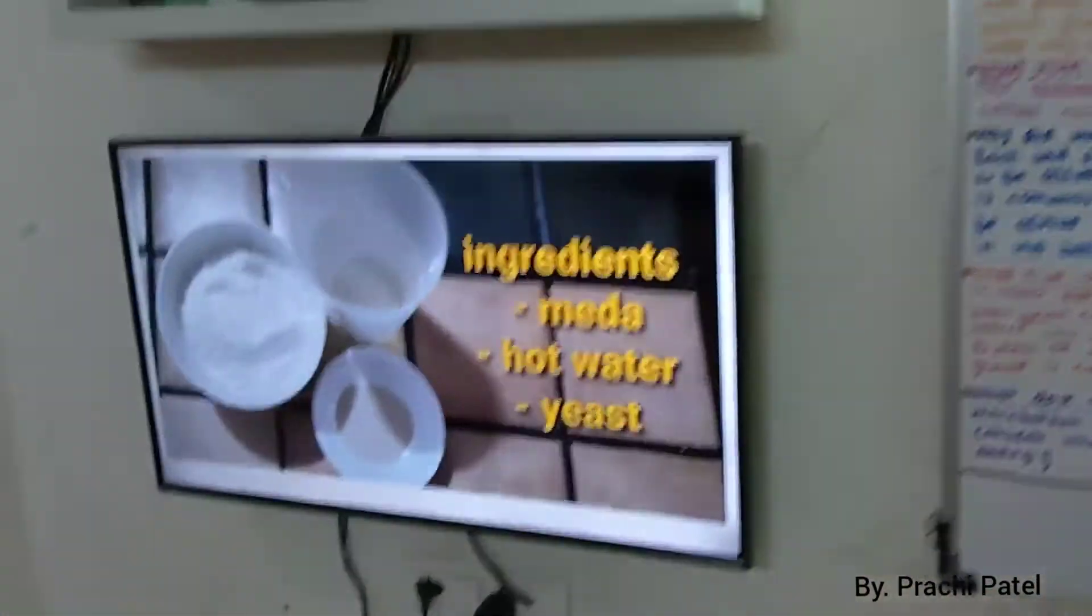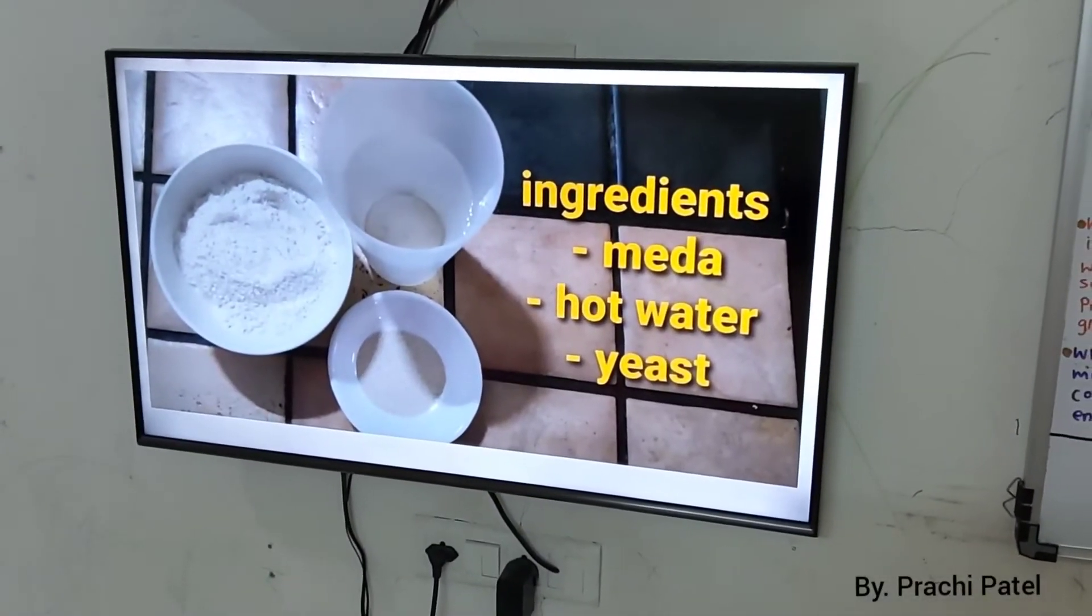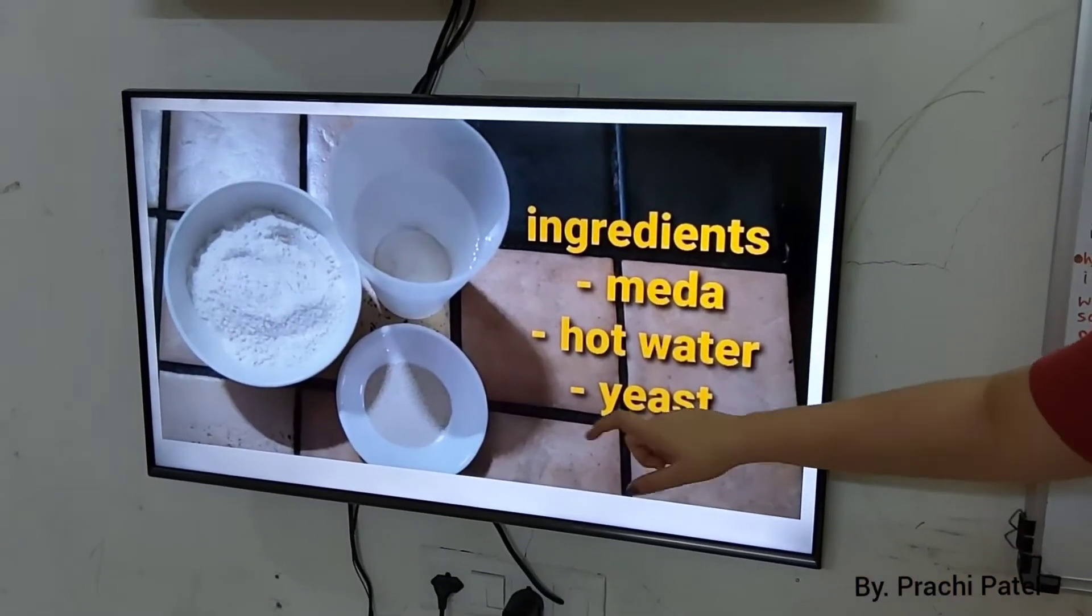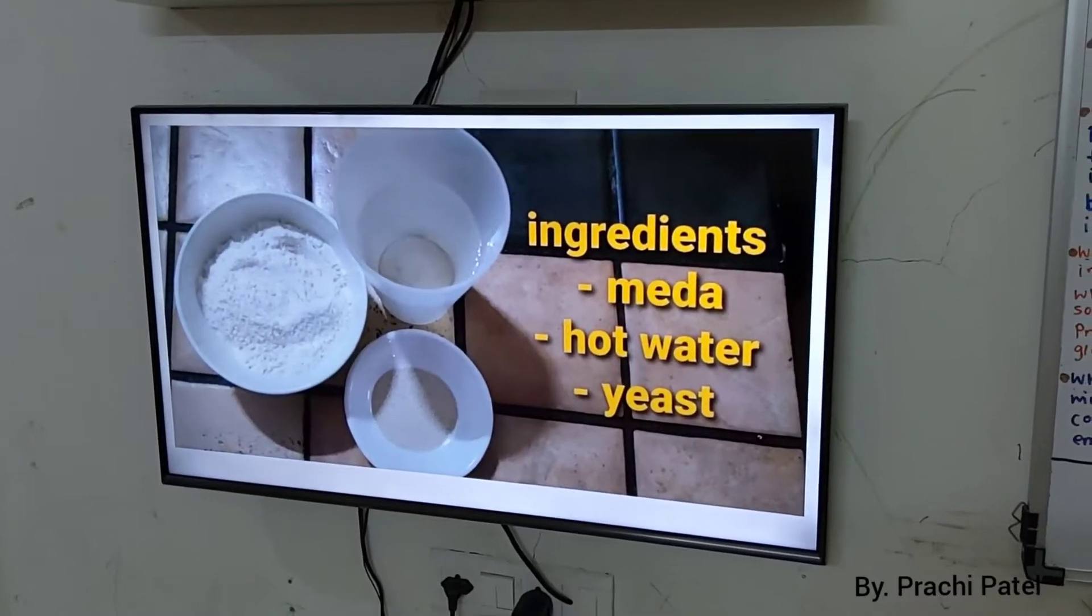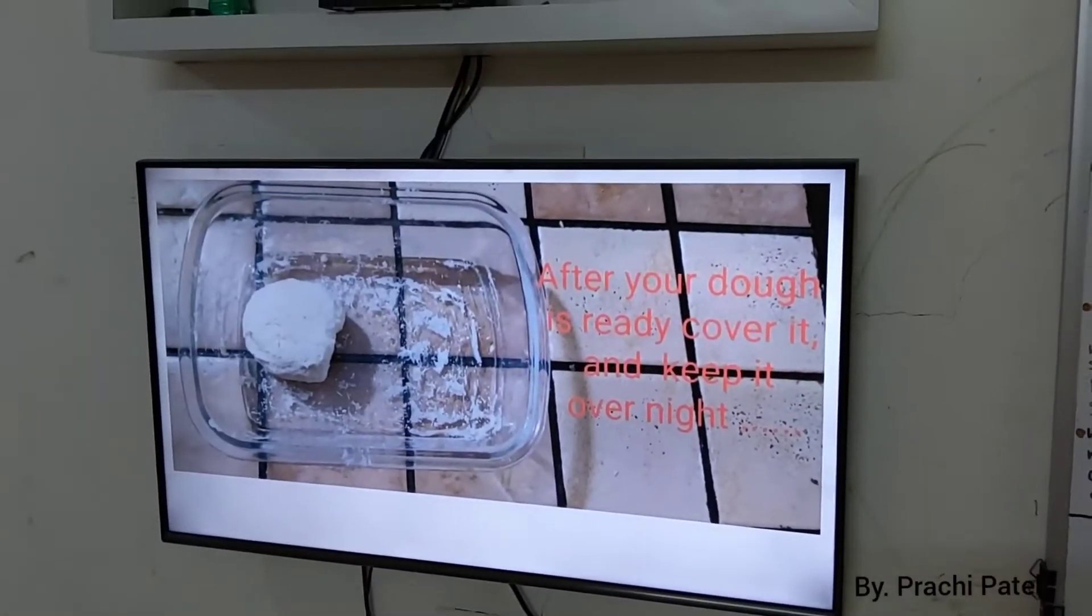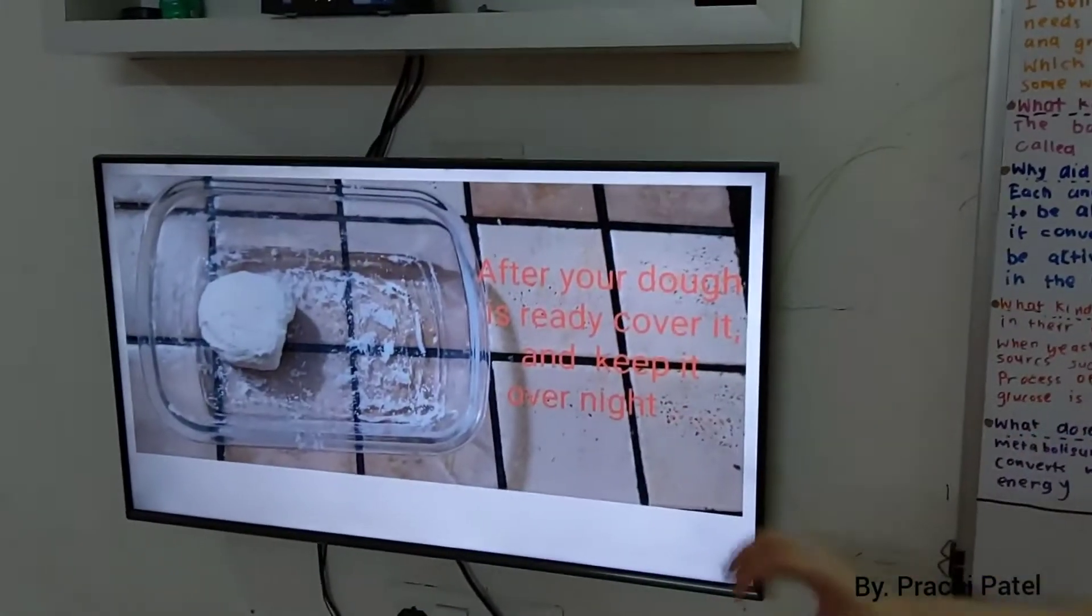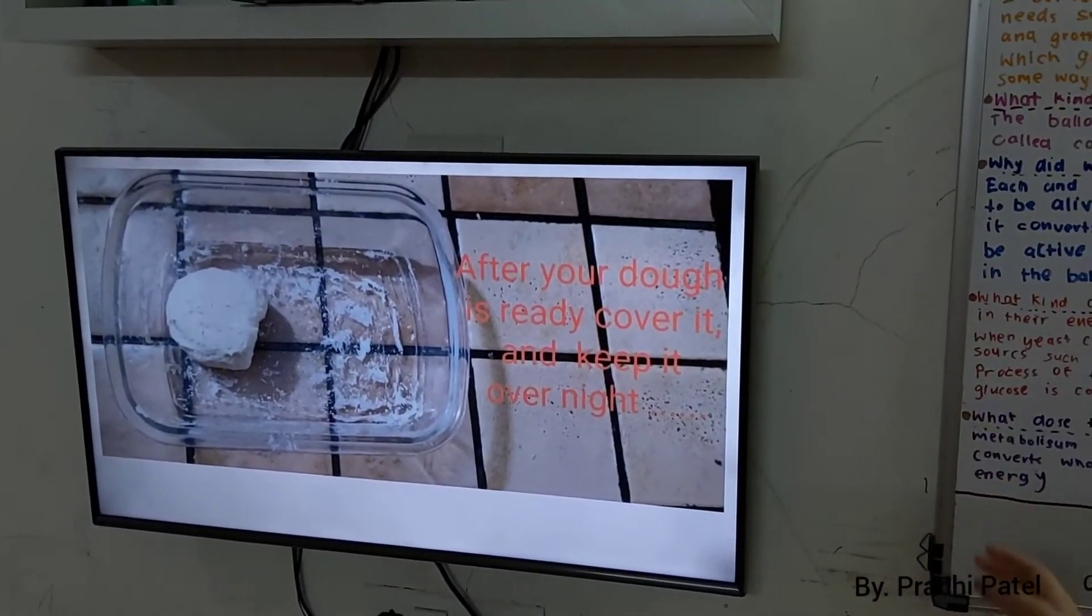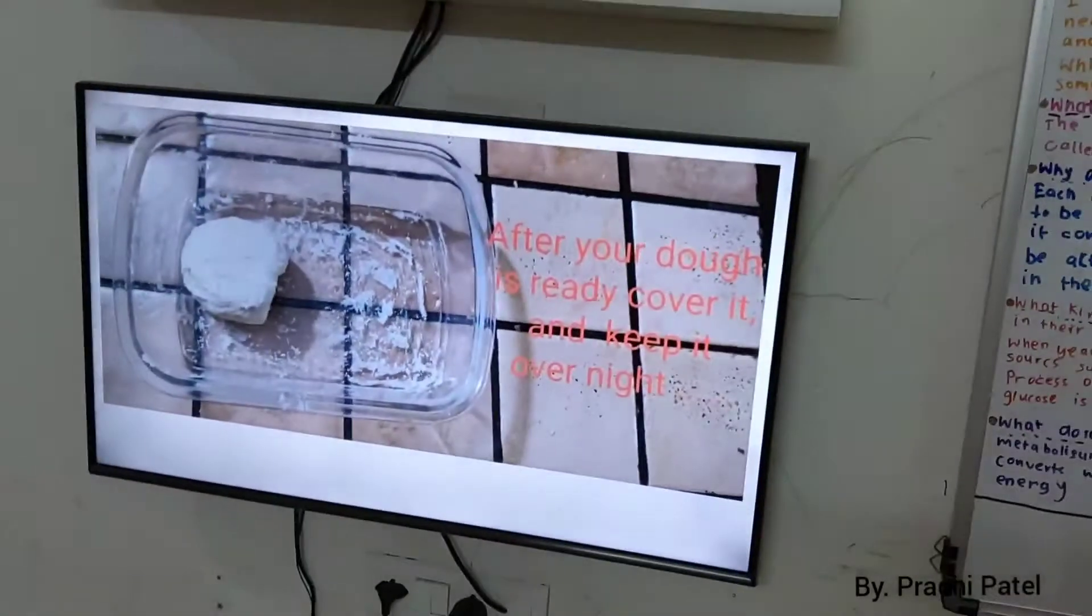Now, the ingredients I used in this experiment of dough: hot water, some yeast and some maida. Then you mix all things together, so it will be a dough. After your dough is ready, you cover it and keep it overnight. You have to keep it in an airtight container.